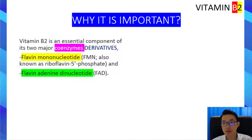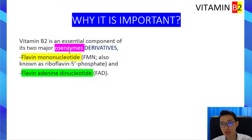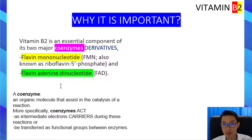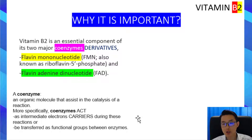Next, we will discuss why vitamin B2 is important. Vitamin B2 is firstly important because it is an essential component of its two major coenzyme derivatives. The first derivative is called flavin mononucleotide, or FMN for short. The second coenzyme derivative is flavin adenine dinucleotide, or FAD for short. A coenzyme is an organic molecule that assists in a chemical reaction. More specifically, a coenzyme acts as an intermediate electron carrier during these reactions, or is transferred as a functional group between enzymes as the reaction progresses.